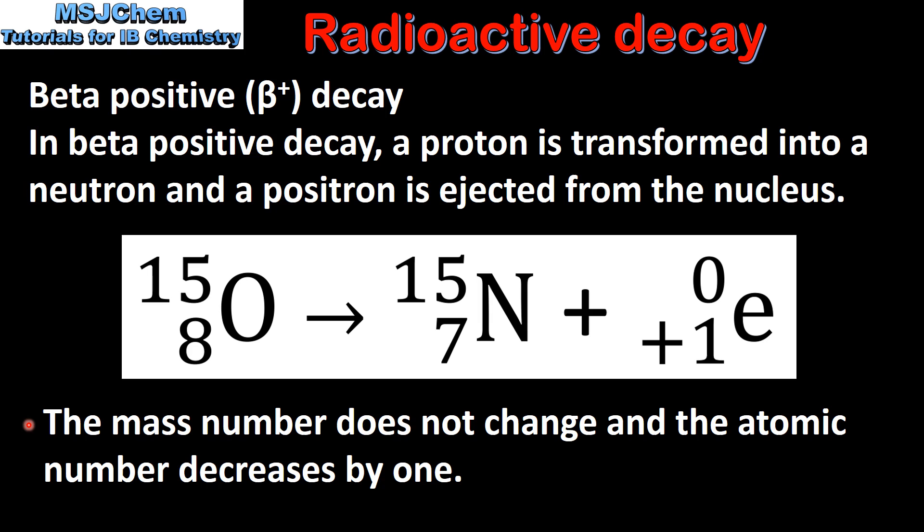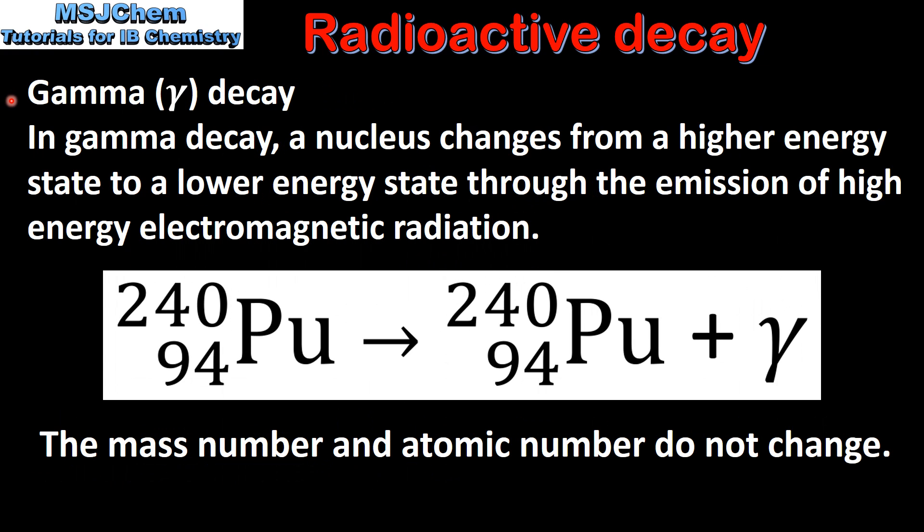By looking at the nuclear equation we can see that the mass number does not change and the atomic number decreases by 1. And finally we look at gamma decay.